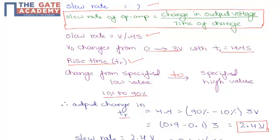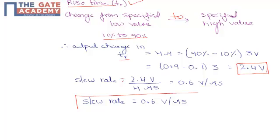Substituting this value in the slew rate equation, slew rate will be 2.4 divided by 4 microsecond, which equals 0.6 volts per microsecond. The final answer is 0.6 voltage per microsecond.